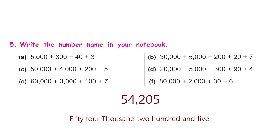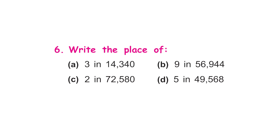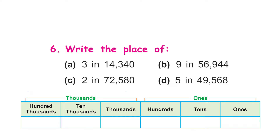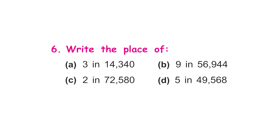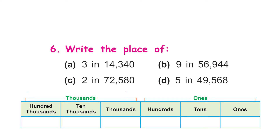Question: write the place of 3 in 14,340. Put it in the chart — 0 comes under ones, 4 under tens, 3 under hundreds. So the value of 3 is three hundred. For part c: find the value of 2 in seventy-two thousand five hundred and eighty — 0 under ones, 8 under tens, 5 under hundreds, 2 under thousands.